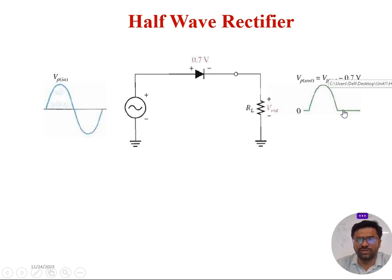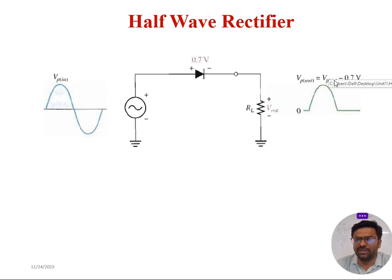For the negative cycle, the output voltage is equal to zero for the practical diode. Considering a silicon diode, the barrier potential is 0.7 V. Therefore, VP output equals VP input minus 0.7 volts for the positive cycle, and for the negative cycle it will be zero.